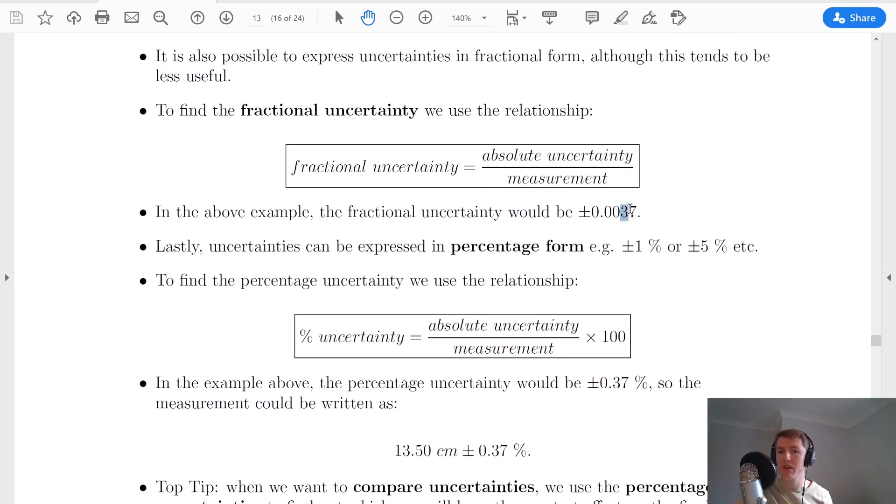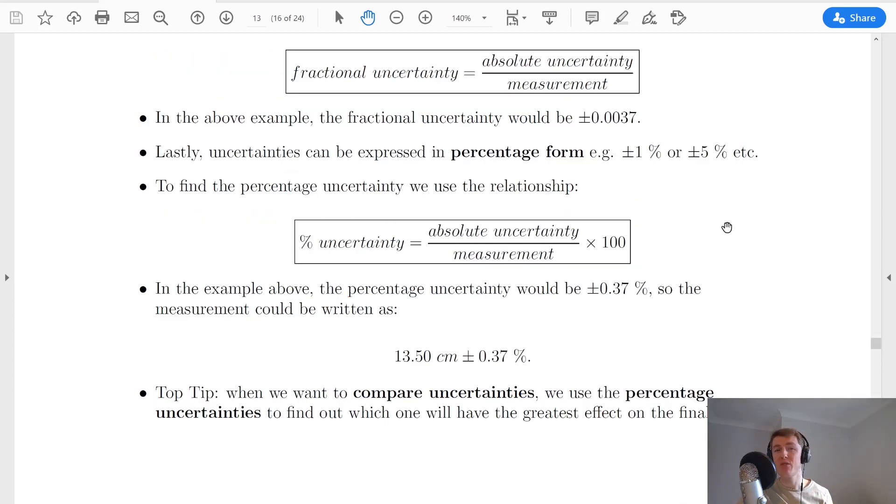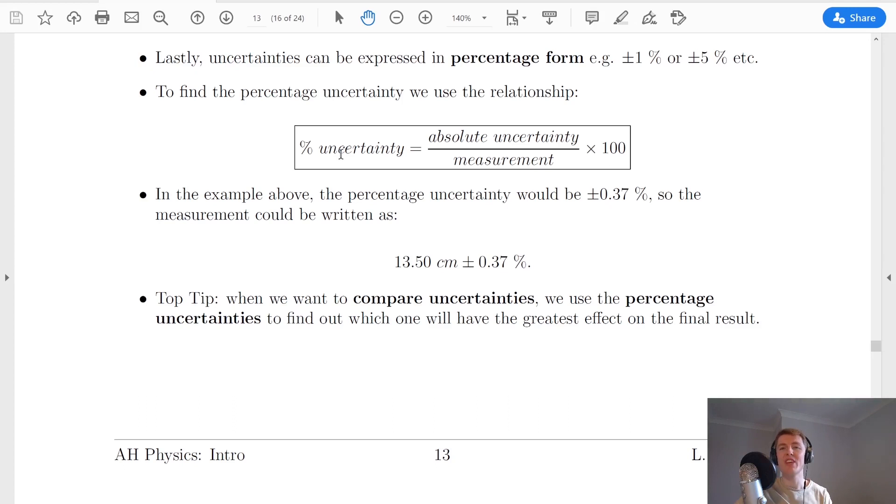That is two significant figures, the 3 and the 7 are my significant figures because the leading zeros don't count. Now we said that fractional uncertainties are less useful and the reason is they don't really allow us to compare uncertainties between different quantities, and that leads us into percentage uncertainties.